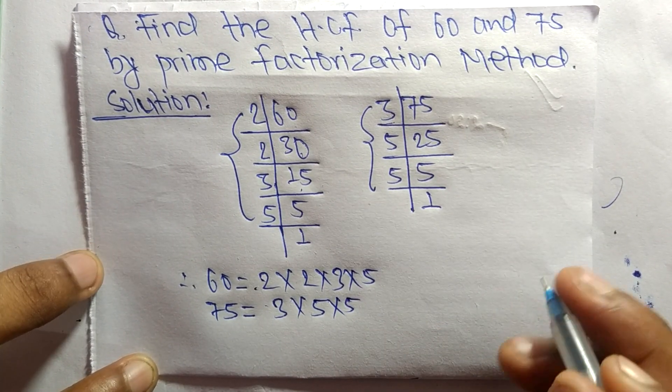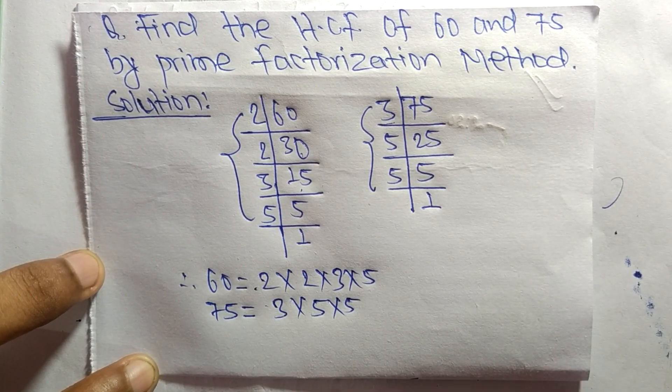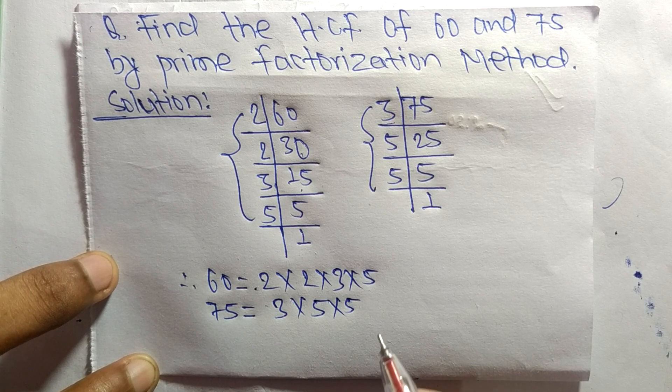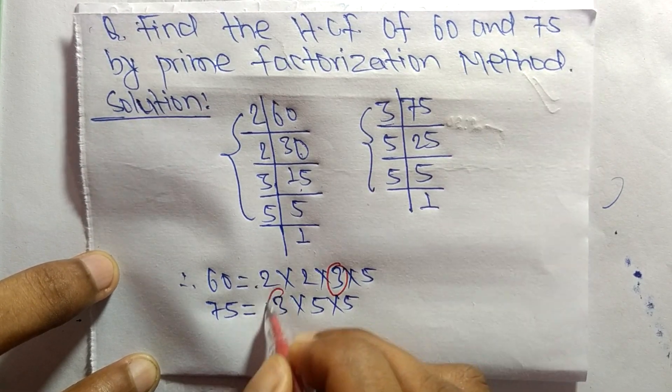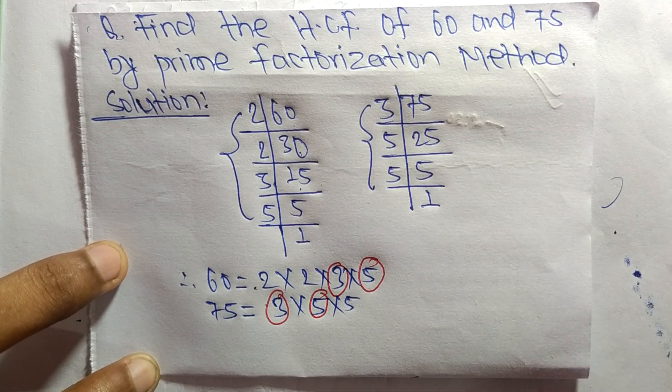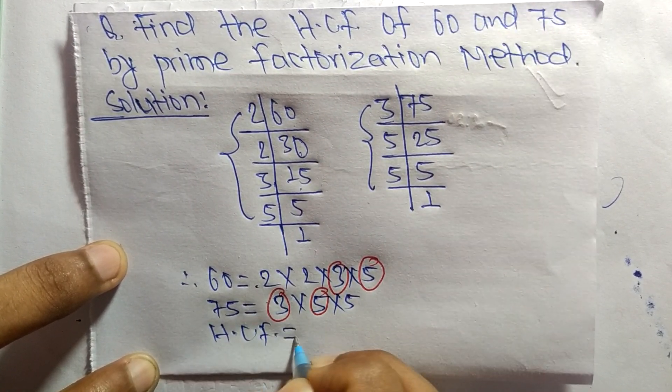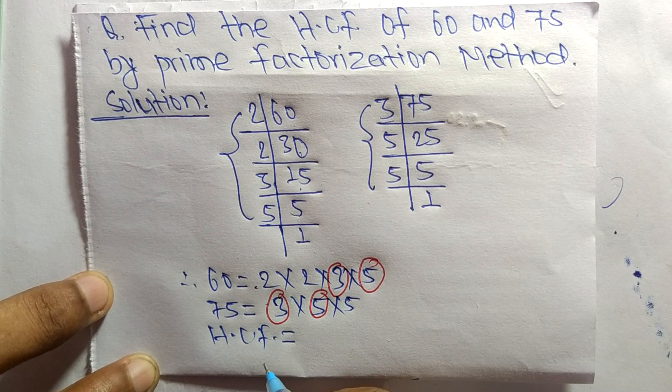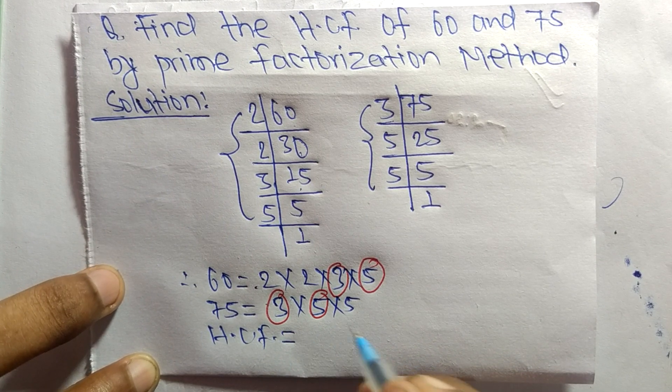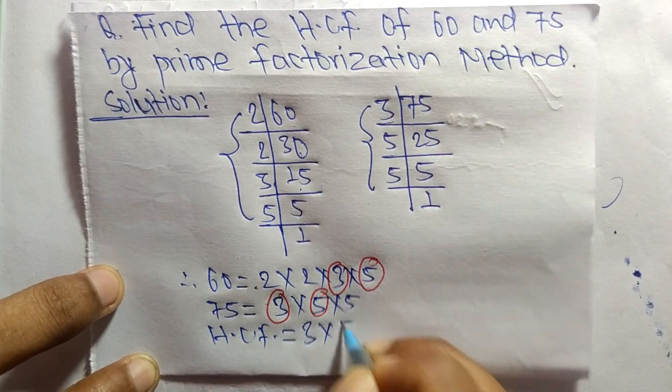So now we select the common factors in this prime factorization. The common factors here are 3 and 5. So the HCF is equal to the product of common factors, which are 3 and 5.